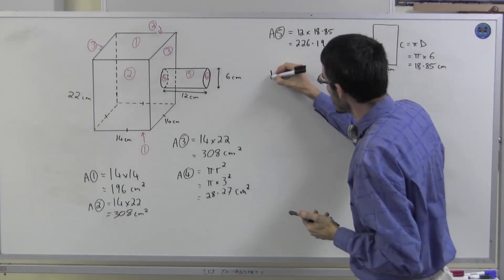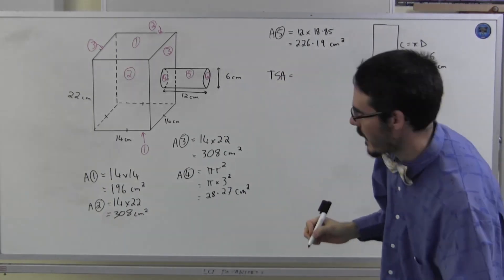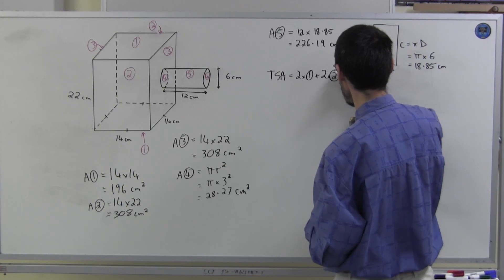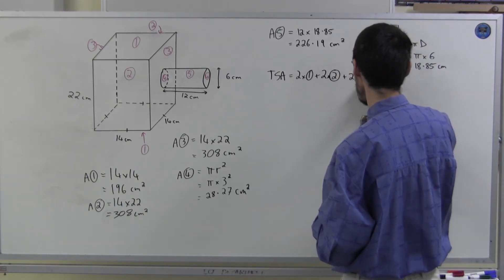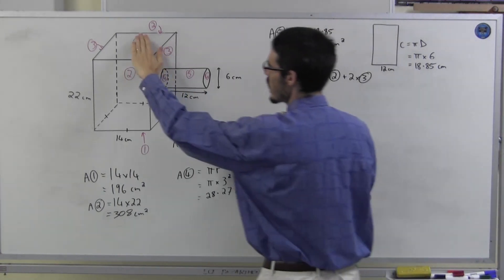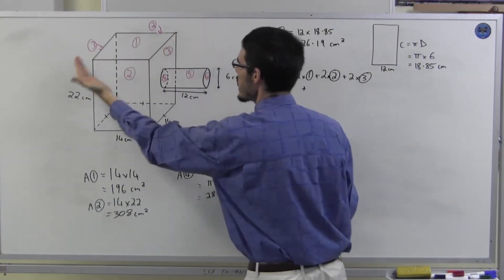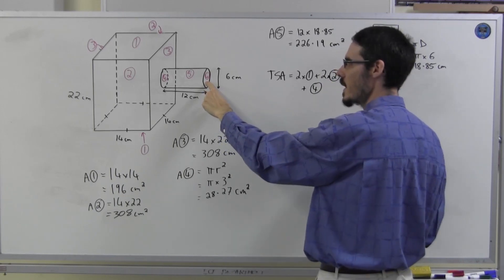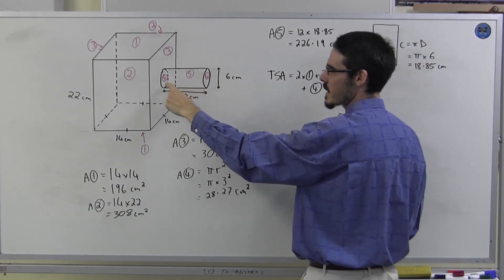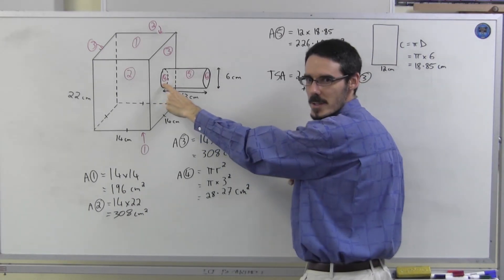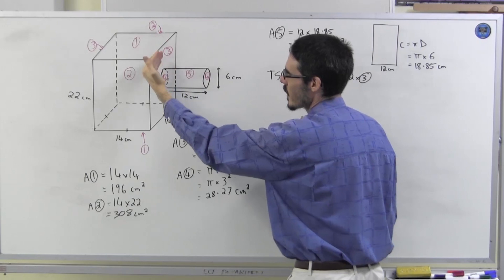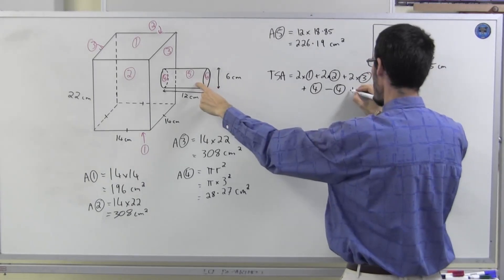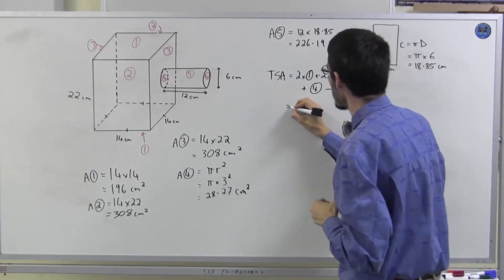So my total surface area is going to be 2 lots of 1 and 2 lots of 2, and we'll just add it on 2 lots of 3. Okay? 2 lots of 1. Sorry, 2 lots of 2. 2 lots of 3. I need 1 extra 4 here. But actually, I have to take away this circle because it's not exposed surface, is it? I actually want the area of this side without that circle. I'm going to take away that 4 again. And then add on number 5. So let's work that out.